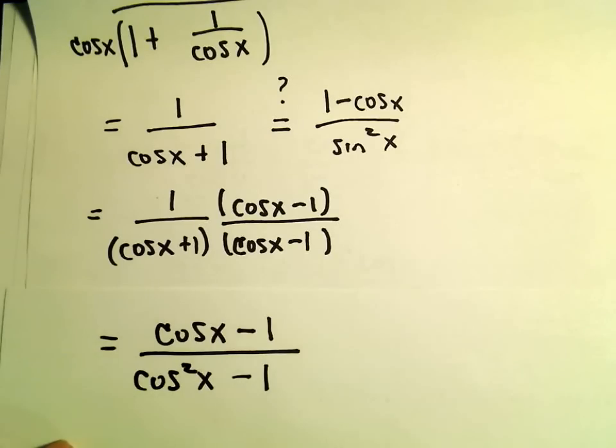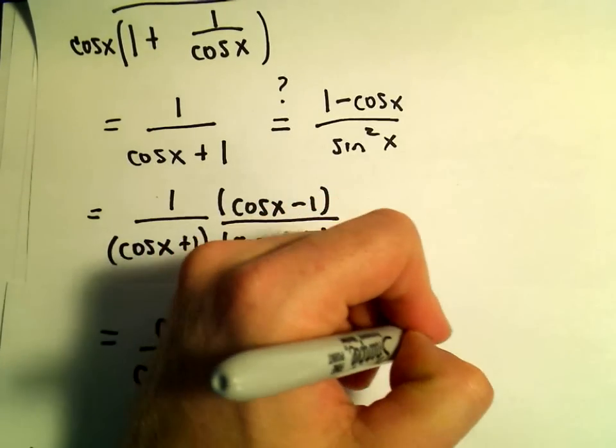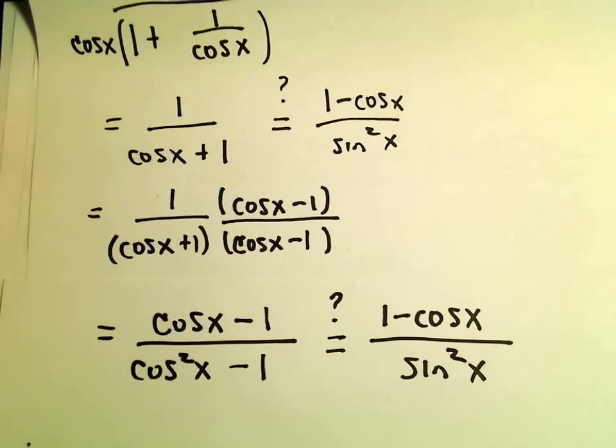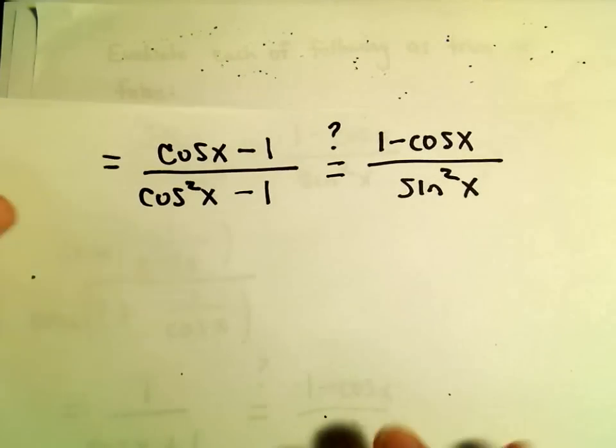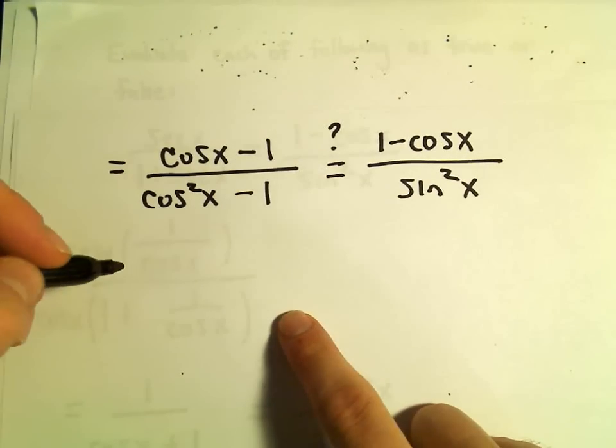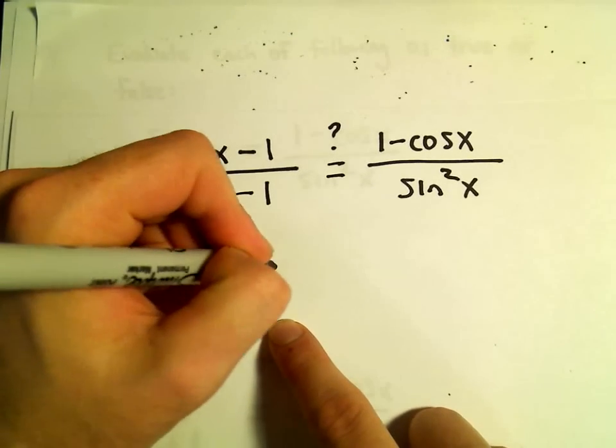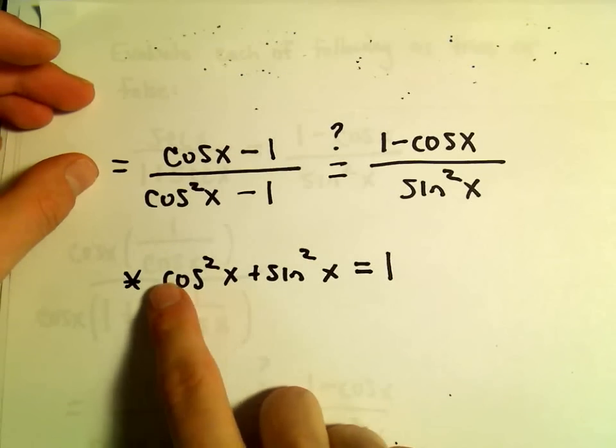So I'm still wondering, is this equal to (1 - cos(x))/sin²(x)? There's definitely a relationship between cos² and sin². Remember, the identity says cos²(x) + sin²(x) = 1.